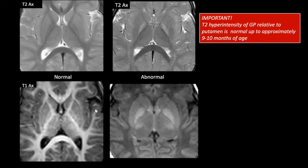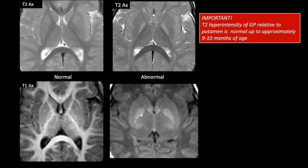A quick summary. The normal globus pallidus is mildly dark compared to the putamen on T2 and mildly bright compared to the putamen on T1-weighted images. An important point not mentioned in Part 1 is that the globus pallidus can be mildly T2 hyperintense relative to the putamen up to approximately 9 or 10 months of age.